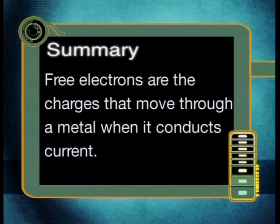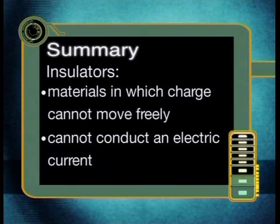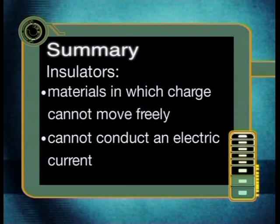Let's now sum up everything we've learnt in this lesson. Free electrons are the charges that move through a metal when it conducts current. In some materials, such as metals — for example copper — charge can move rather freely. These materials can conduct an electric current; we call such materials conductors. In other materials, such as glass, nylon and plastic, charge cannot move freely. These materials cannot conduct an electric current; we call these materials non-conductors or insulators. In our next lesson, we will investigate how we can increase an electric current through a conductor. Until then, thank you and goodbye.